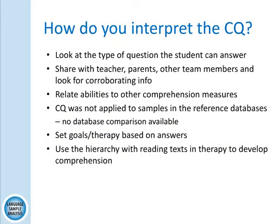How do you interpret the comprehension questions? Look at the type of question the student can answer. Are they only answering remember and understand but unable to answer higher-level questions like apply, analyze, evaluate, create? Or are they getting all twos on remember and understand, then falling to ones on apply and analyze, getting zeros on evaluate and create? That tells you a lot about that student and their thinking ability. Share it with the teacher, parents, and other team members, and look for corroborating information — teachers will often say the child can tell you basic facts but can't apply the information. You can also relate the abilities to other comprehension measures you've done with that student.